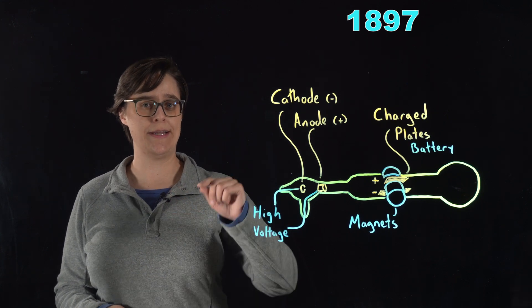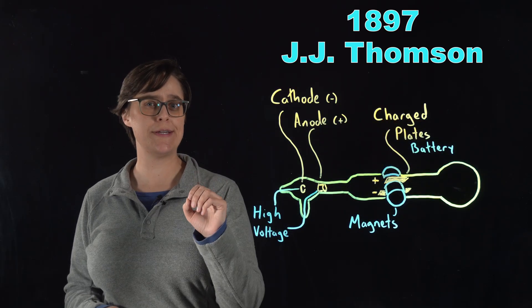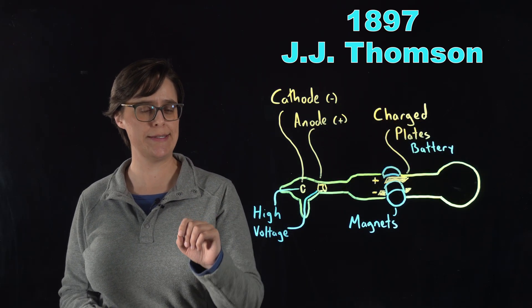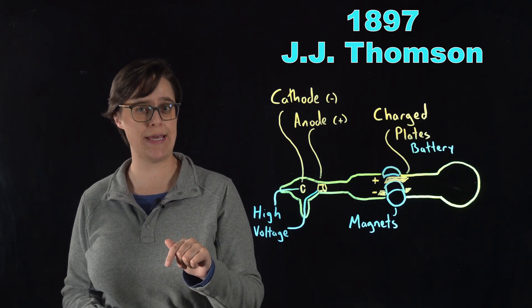The year is now 1897 and JJ Thompson is using a cathode ray tube to investigate mysterious beams of light in an effort that will help us piece together the structure of the atom.